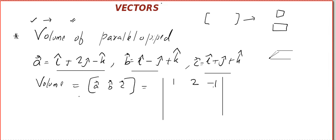1, 2 minus 1, 1 minus 1, 1 and 1, 1, 1. You can use properties of determinants that will make things a little bit easier for you. So, you can do R2 minus R1, R3 minus R1.